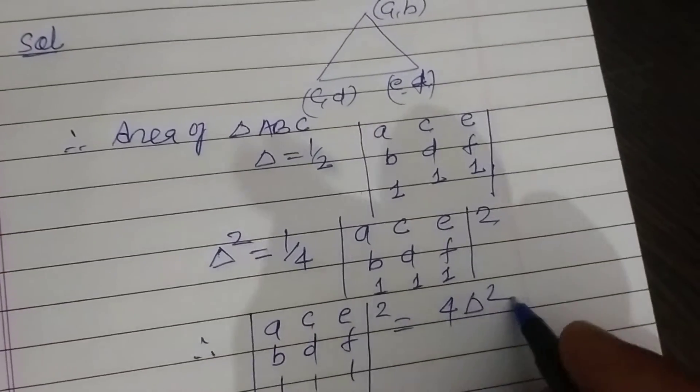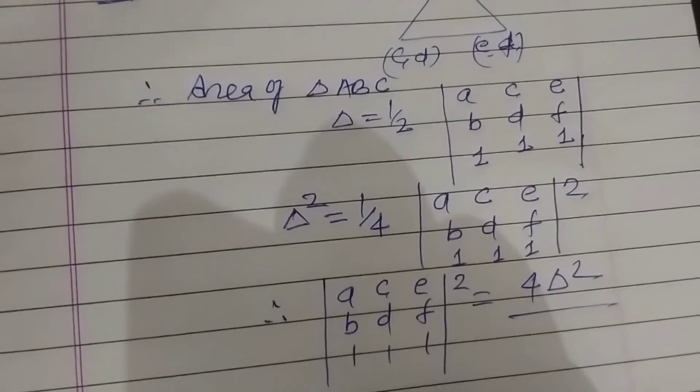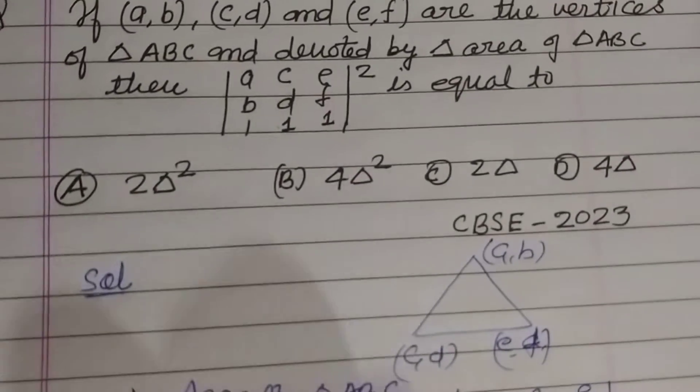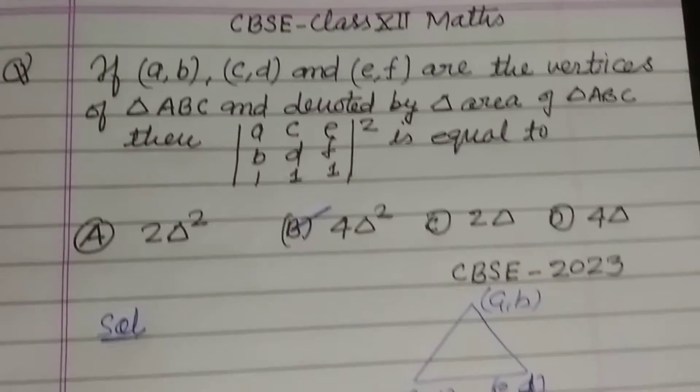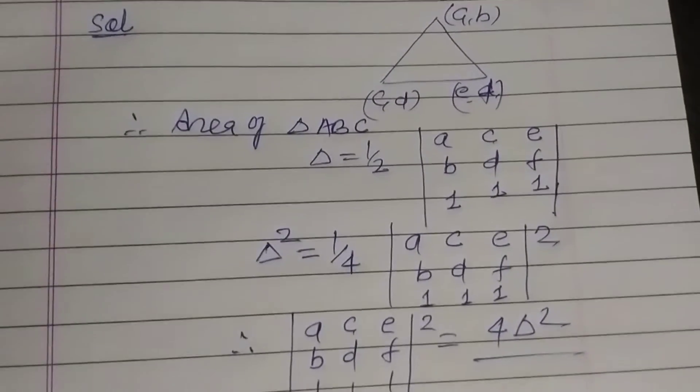So 4 times delta squared is the answer of this question, which is found in option B. I hope you got it. Please like the video, subscribe the channel, thanks for watching.